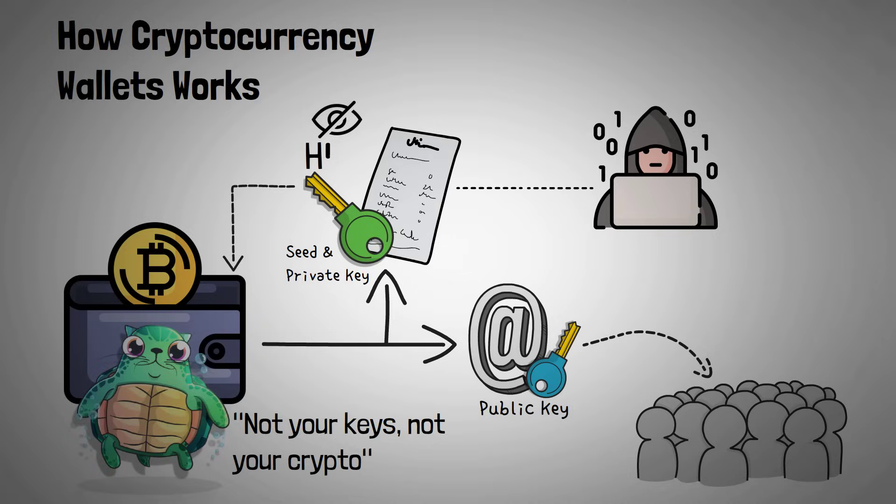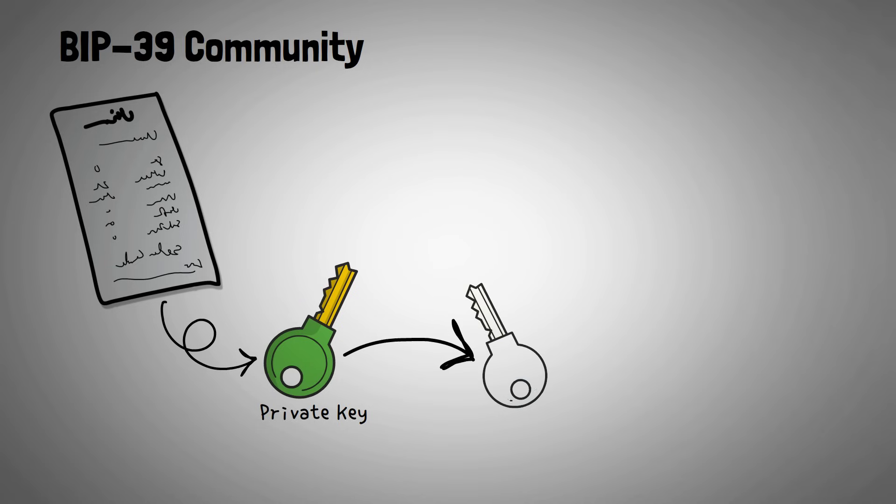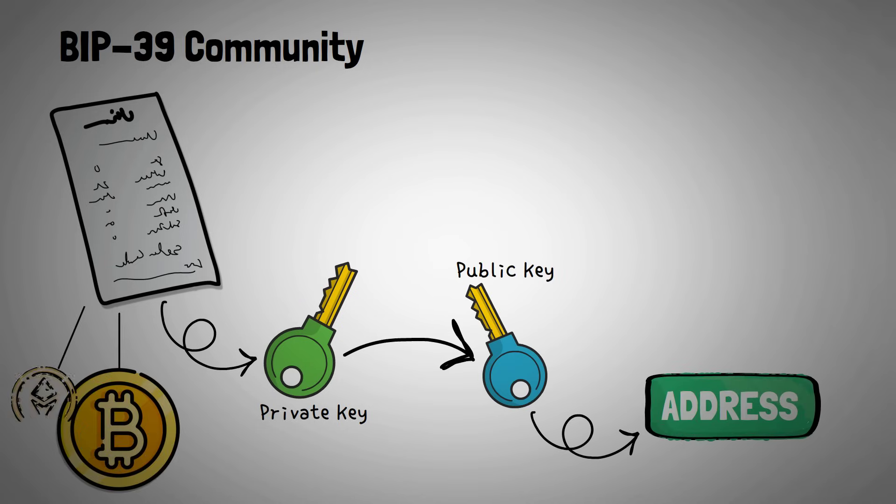It's really important to keep your seed phrase and your private keys private. But how we achieve this is actually kind of complicated, and there have been many different ways proposed. BIP39 is a community proposal describing how seed phrases can be generated and how to simply back up and recover your crypto wallet. It was passed and is now used on the Bitcoin blockchain, but because of its simplicity and usefulness, it's also used on many other chains.